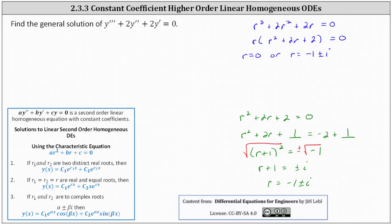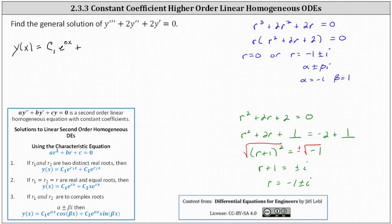If the complex solutions are in the form alpha plus or minus beta i, notice alpha is equal to negative 1 and beta is equal to 1. Now we'll use what we know about second order equations to write the general solution. The general solution is y of x equals — because r equals 0 is one distinct root, we have c sub 1 times e to the power of 0 times x. Then, for the two complex solutions using the notes for number three, where roots are in the form alpha plus or minus beta i, the second order general solution is c sub 1 e to the alpha x cosine beta x plus c sub 2 e to the alpha x sine beta x.